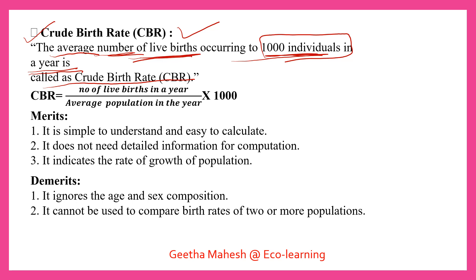We need to calculate the crude birth rate using the formula: number of live births in a year divided by the average population in the year.